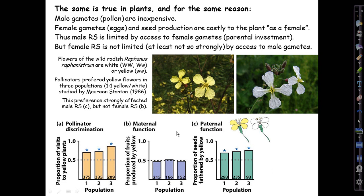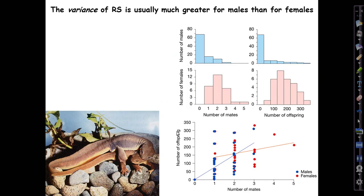There's the principle illustrated in plants, mediated in this case by pollinators. Another consequence — really a corollary — of the different ways reproductive success is limited for males and females, is that the variance of reproductive success over males is usually much greater for males than for females.